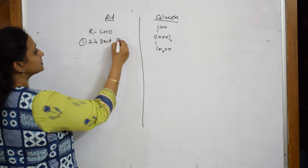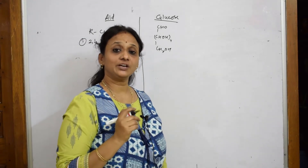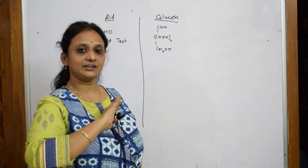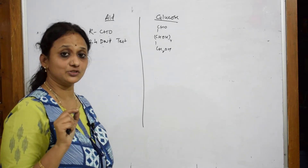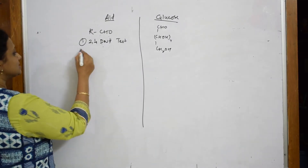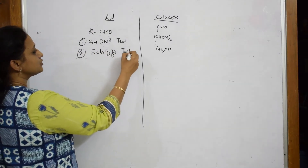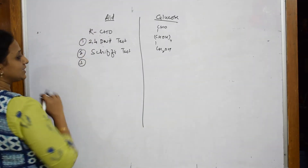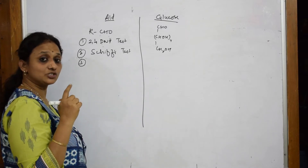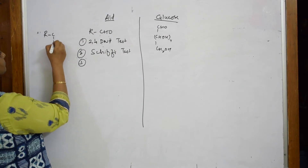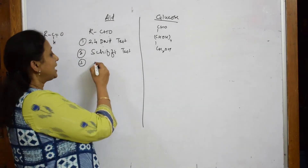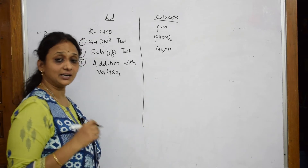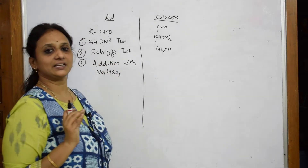If we assume glucose exists as a free aldehyde, then it should respond to the characteristic tests of aldehydes. The first is the 2,4-DNP test, where hydrazines are converted to hydrazones by removal of a water molecule. Second is Schiff's test, which is used to detect an aldehyde group. Third is addition with NaHSO₃ (sodium bisulfite), which forms an adduct — an addition product. All three are characteristic tests of aldehydes.